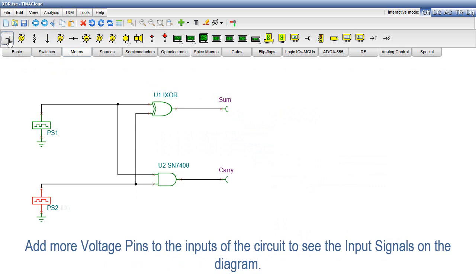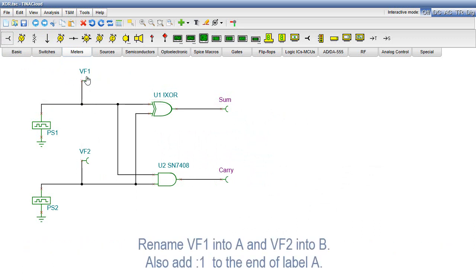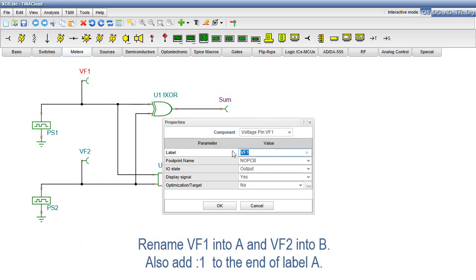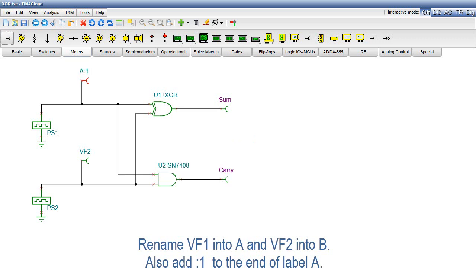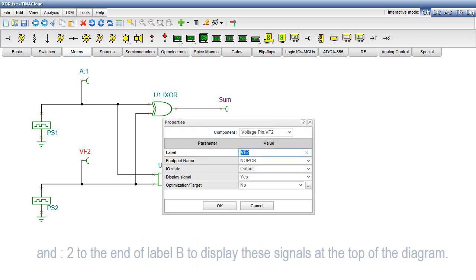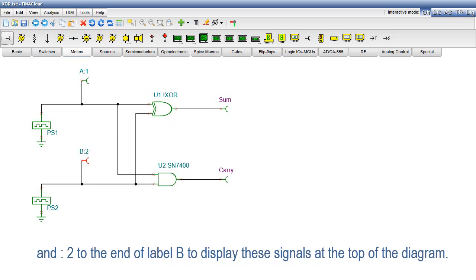Add more voltage pins to the inputs of the circuit to see the input signals on the diagram. Rename VF1 into A and VF2 into B. Also, add colon 1 to the end of label A and colon 2 to the end of label B to display these signals at the top of the diagram.